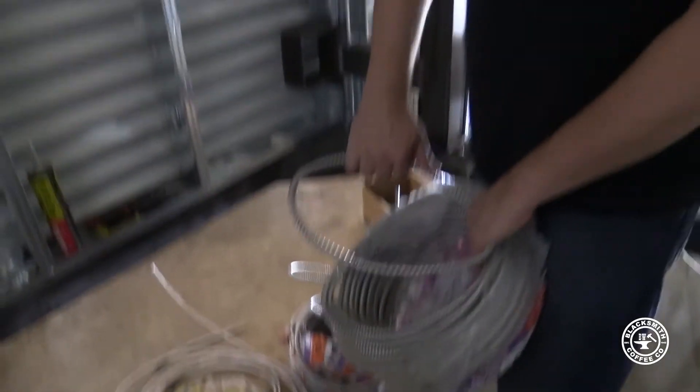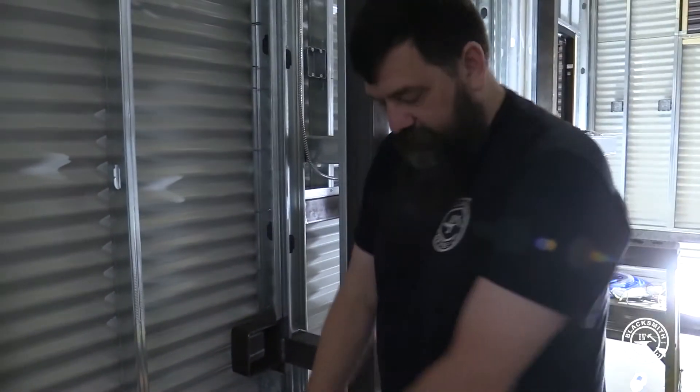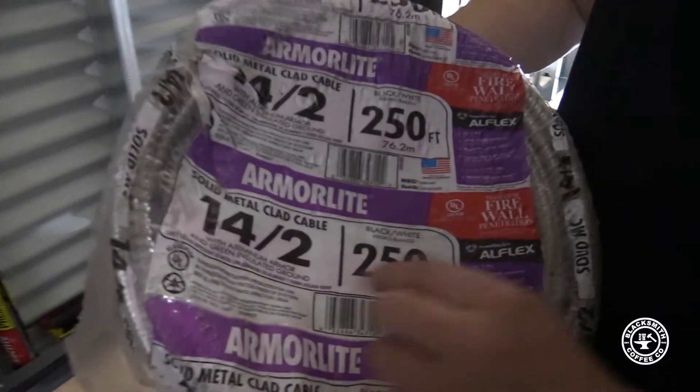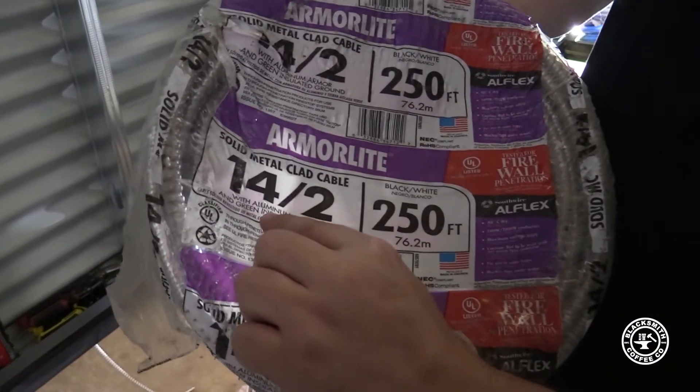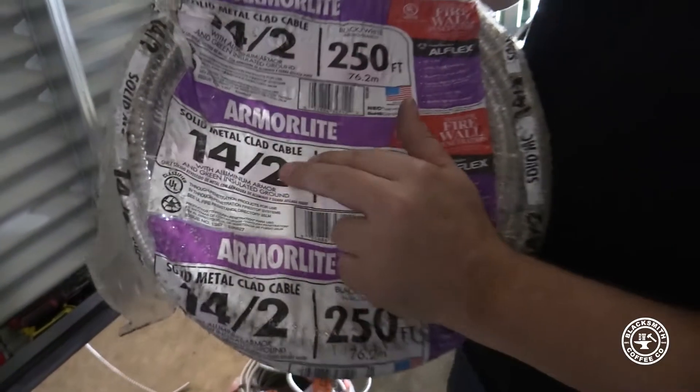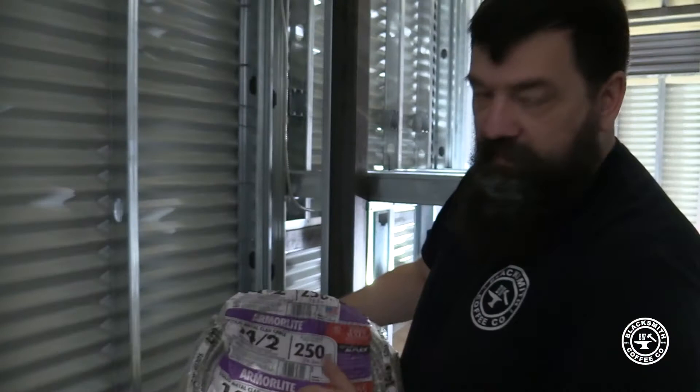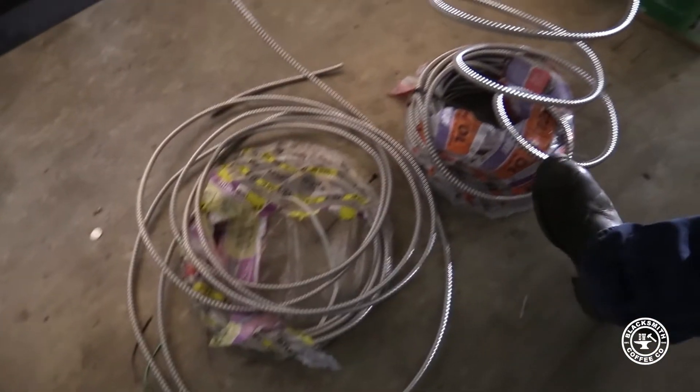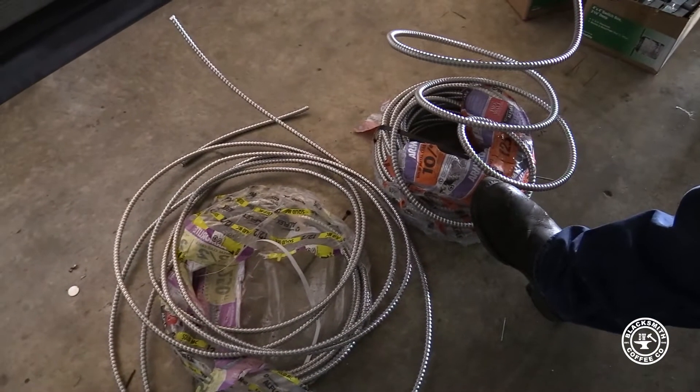It's what's inside that counts, and what it looks like on the package here, see this is 14-2, and then it's going to be with ground. If you read all this, it'll say with a green insulated ground. So this basically has three connectors. 14 means the size, two is how many connectors, and it's with a ground. So 14-2 with ground means it has three wires. This would be 12-2 with ground, and then this is 10-2 with ground.